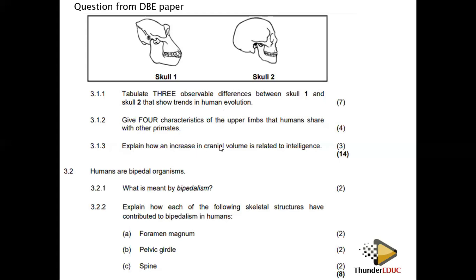Explain how an increase in brain or cranium volume is related to intelligence. An increase in cranium size means it can accommodate more brain tissue. More brain cells are an indication of intelligence — a bigger cranium indicates more brain cells, which indicates a greater intelligence.